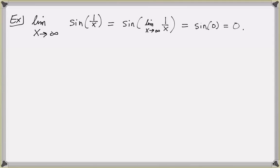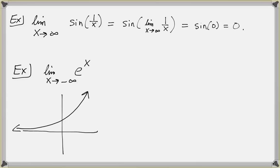Let's consider another important function: the limit of e to the x as x approaches negative infinity. Here is a quick sketch of the graph of y equals e to the x. From the graph, we see that the function is getting closer and closer to the x-axis, or in other words to height 0, as x gets very, very large to the left. So the limit of e to the x as x approaches negative infinity equals 0.